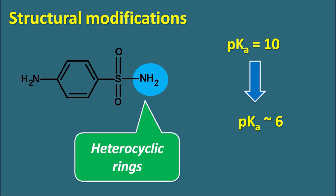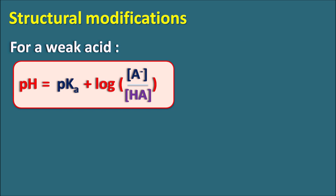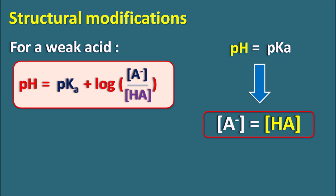When the pKa is brought nearer to urinary pH, applying the Henderson-Hasselbalch equation: when pH = pKa, log([A⁻]/[HA]) = 0, meaning [A⁻] = [HA] (since log 1 = 0). The drug then exists as 50% salt and 50% acid — that is, 50% ionized — which is sufficient to solubilize the drug in urine and minimize crystalluria.